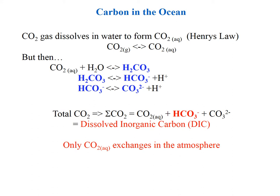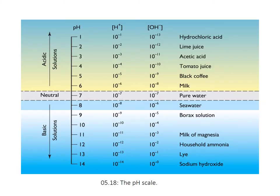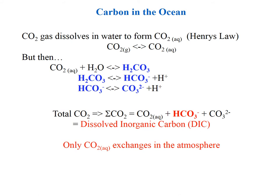So we start out with something approximately neutral. We add CO2, that CO2 reacts with the water and forms carbonic acid, which acidifies the water by dissociating and releasing those hydrogen ions. So we're adding hydrogen ions by adding CO2, making the water more acidic. This is what's happening to the ocean.